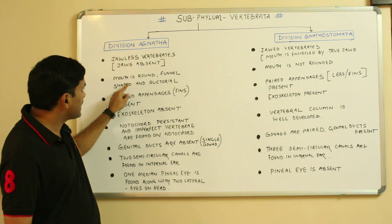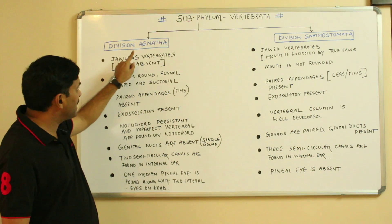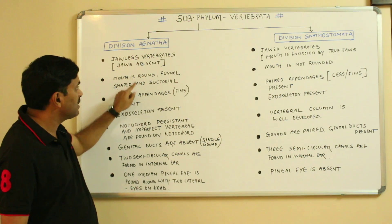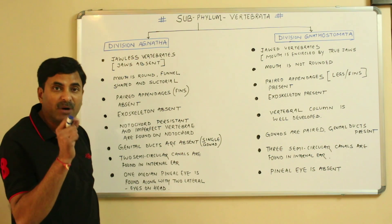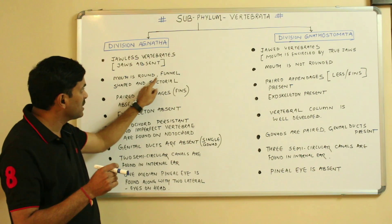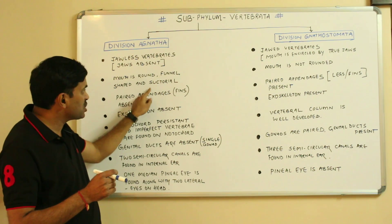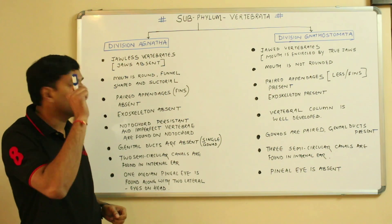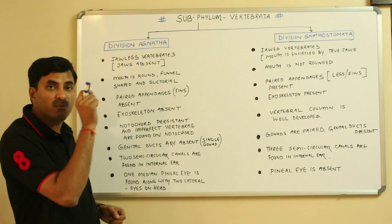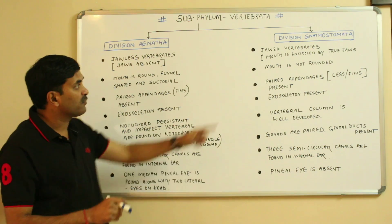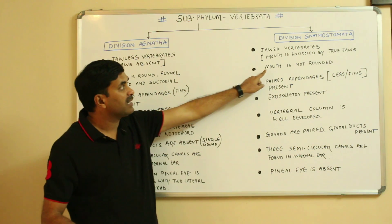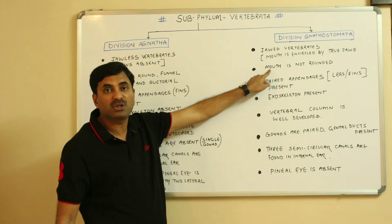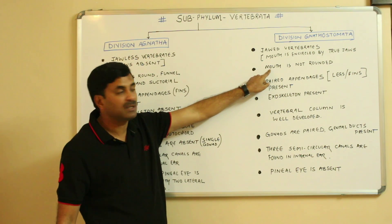The second point is that members of division Agnatha have a round mouth — the mouth is round, funnel-shaped, and suctorial. While in the case of division Gnathostomata, the mouth is not rounded.